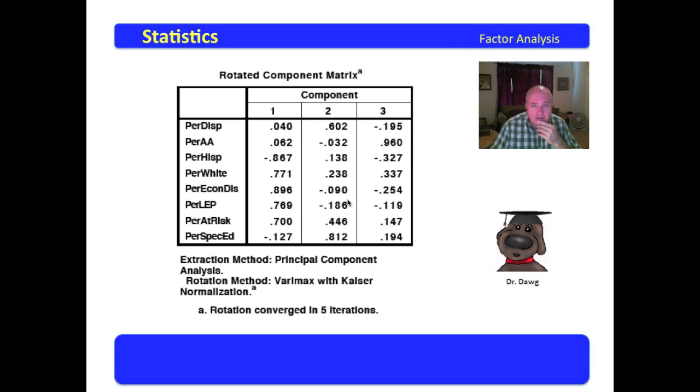The next one, we notice that the most profound impacts are with the percentage of disciplinary placements. It is very much impacted by special ed and by the percentage of at risk students. I read this to say that if you're a special ed student and you're at risk, and you do anything, your butt's going to get a disciplinary placement. You would be more likely to. We might call that special needs.